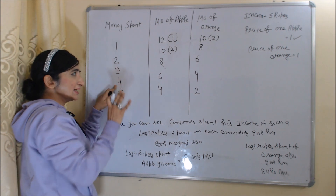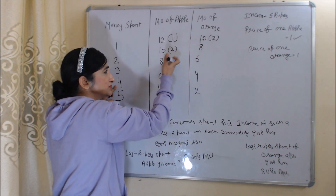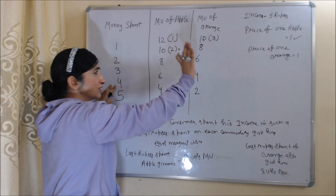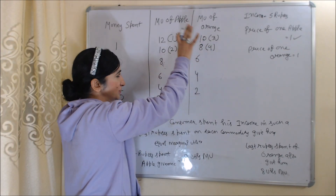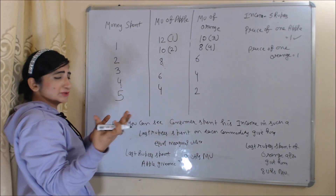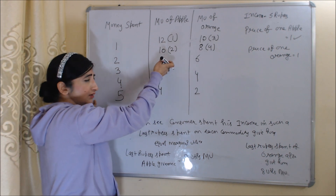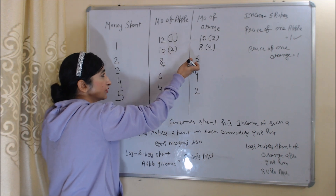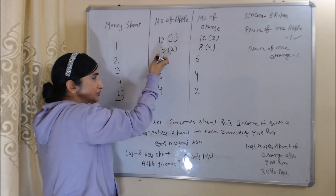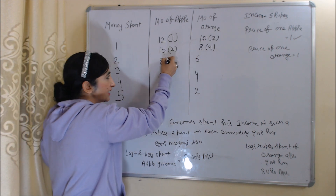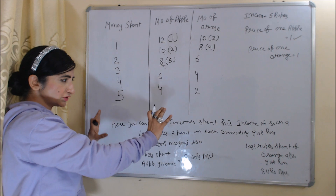For the fourth rupee, the fourth orange or third apple both give him the same marginal utility of 8. Suppose he chooses to buy a second orange. For the fifth rupee, he has two options — third apple or third orange. He will spend on buying apple because apple gives him more satisfaction: marginal utility from apple is 8 utils versus 6 from orange. So he spends the fifth rupee on buying apple.